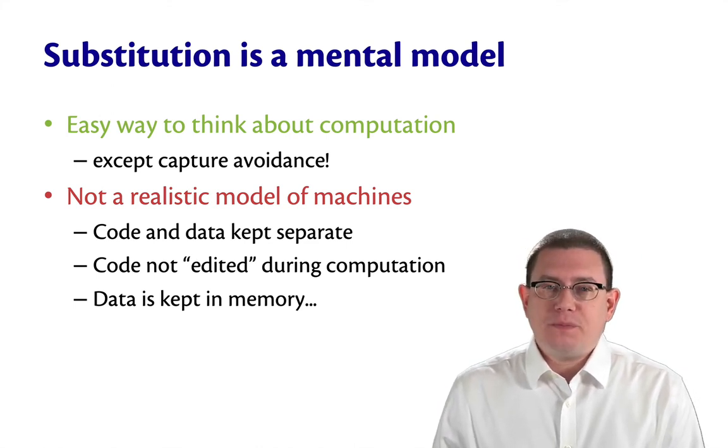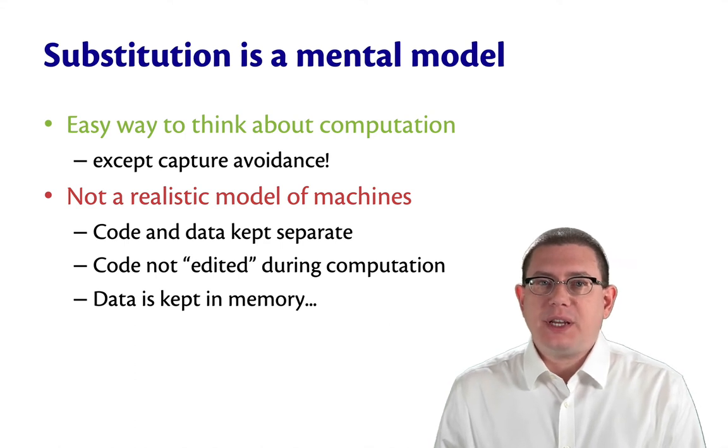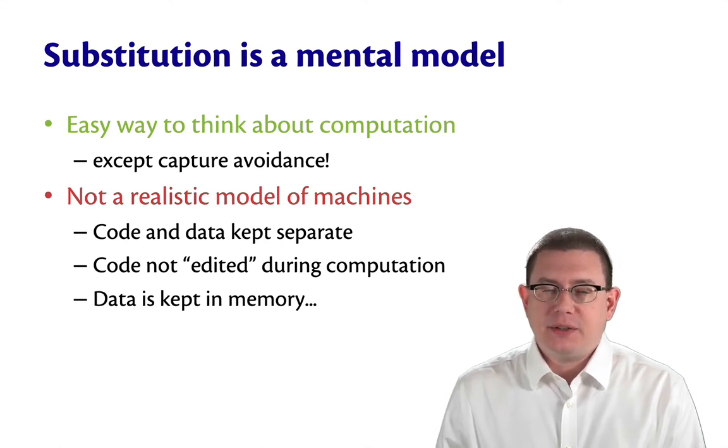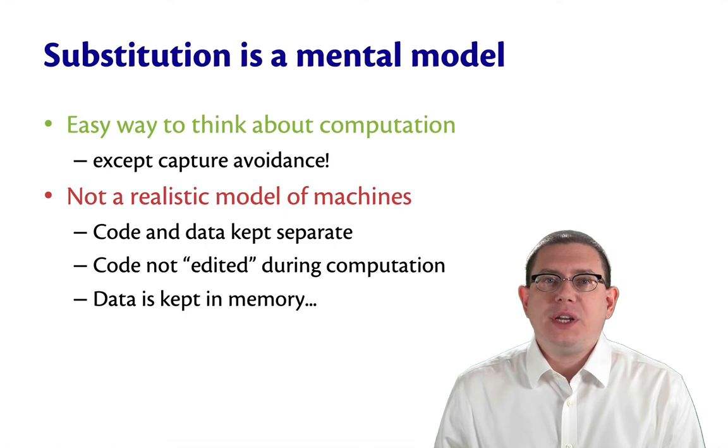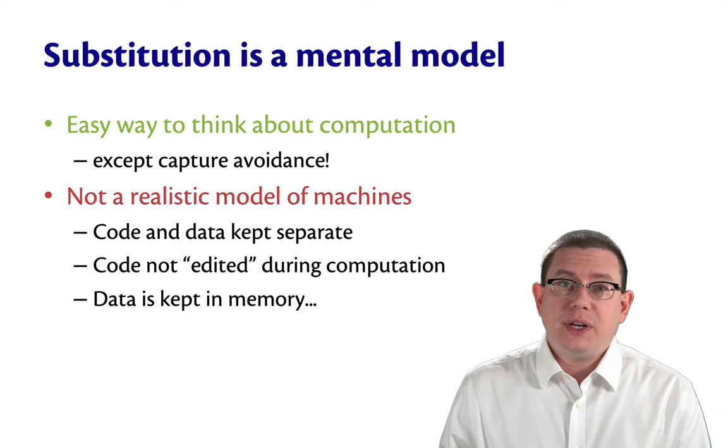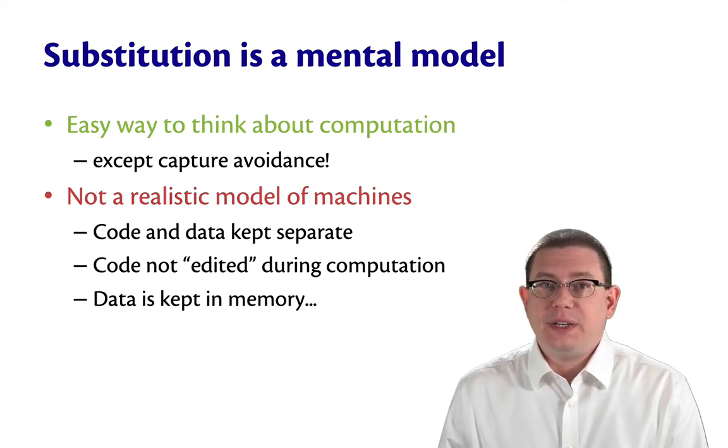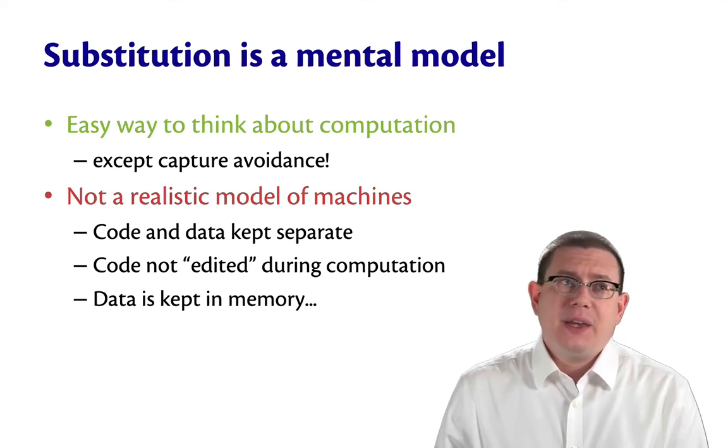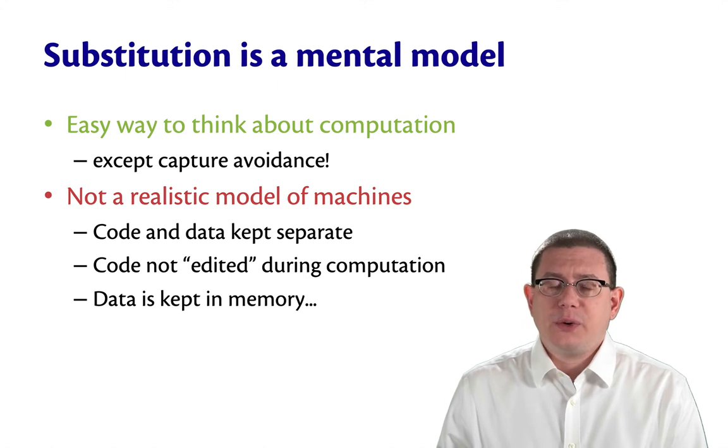But the substitution model is not a realistic model of machines. In a machine, code and data are usually kept separate. We have a separate area of memory for storing code and a separate area of memory for storing data. Classically, anyway. These days, sometimes the two blur together a little bit.